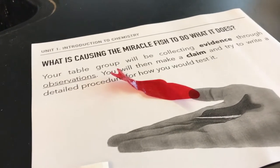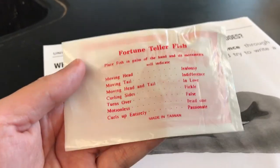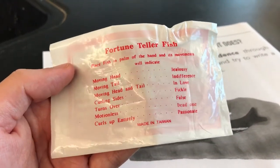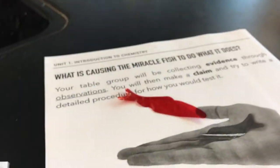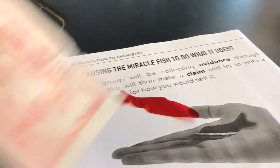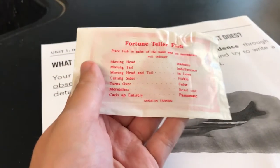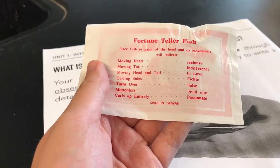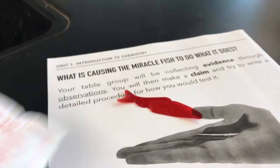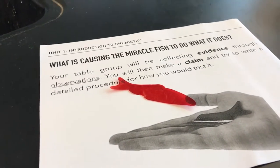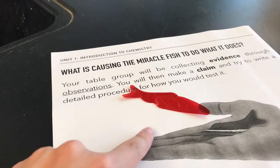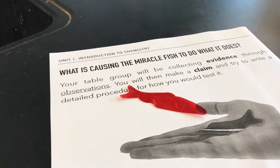Depending on what happens, it's supposed to tell you what kind of person you are. So with the head and the tail moving, I'm in love — or maybe that would be curling sides. But anyway, the whole point is: what do you think might be causing this to happen?